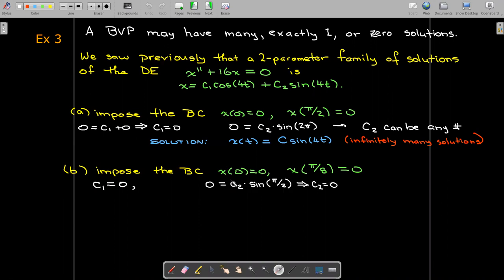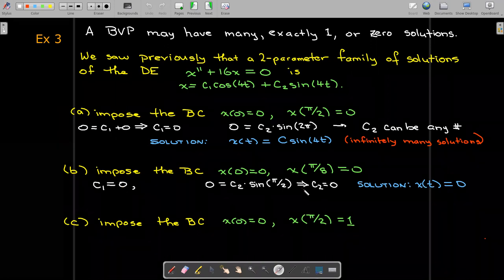But now the only way we can make this second equation from the second boundary condition true is if c_2 is 0. So both c_1 is 0 and c_2 is 0. And so the only solution is x(t) equaling 0. It's identically 0.